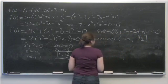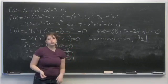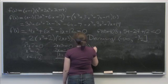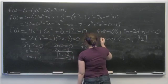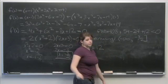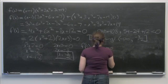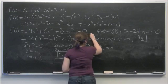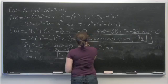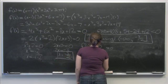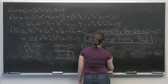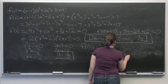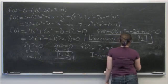Now picking x = 0: f'(0) = 0 + 0 + 0 + 12 = 12, which is greater than 0. So the function is increasing as x gets larger, meaning our interval of increase is (-3/2, +∞).